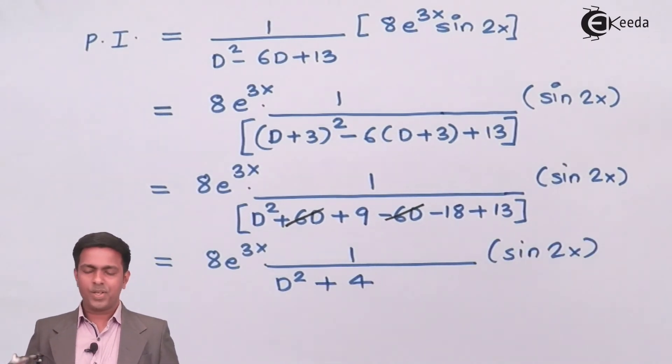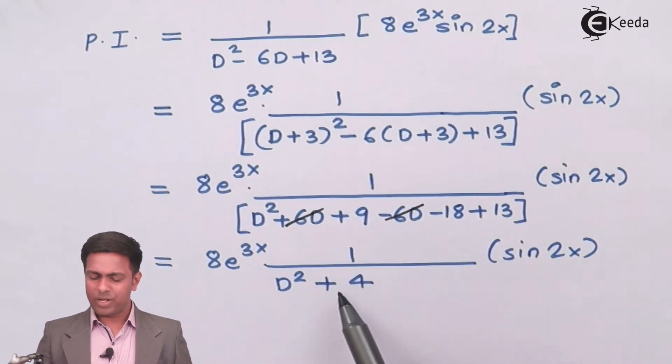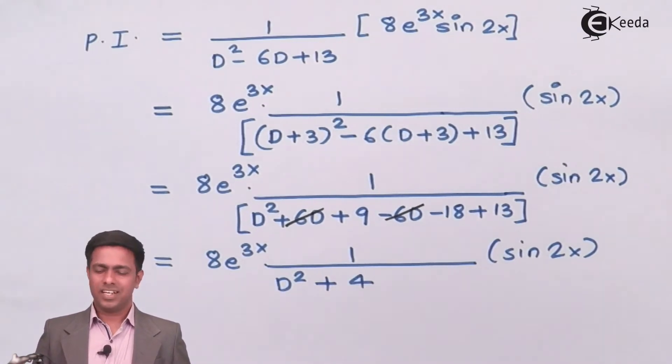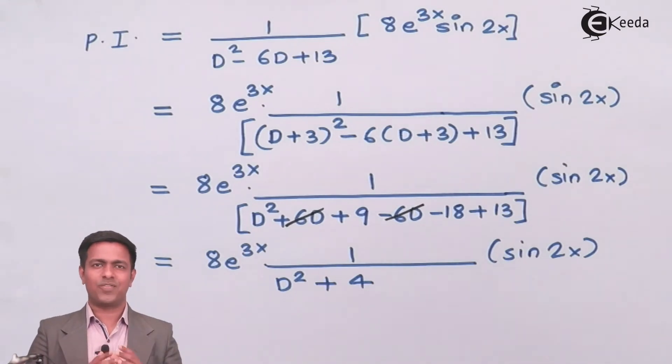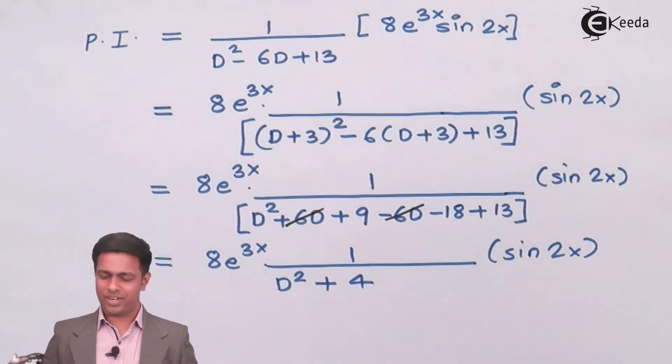Here we will apply this 1 upon D² + 4 on sin of 2x. Since the function is sin of ax that is why we will use the rule which we have seen in the method of sin of ax where we said replace D² by -a² in f of D.